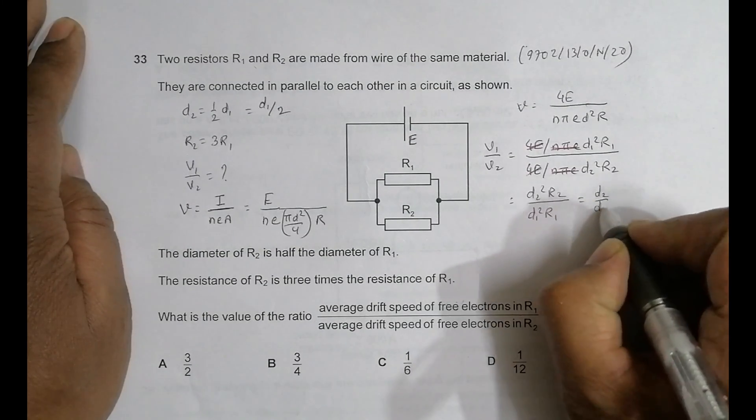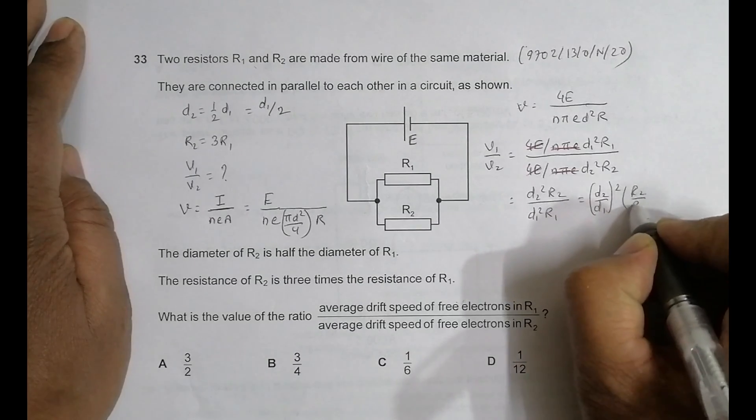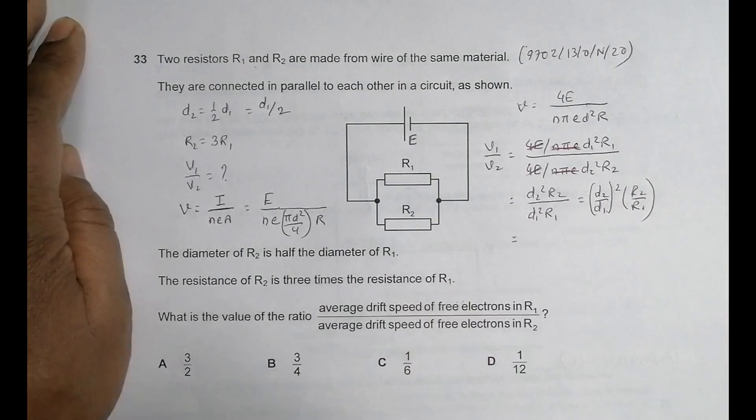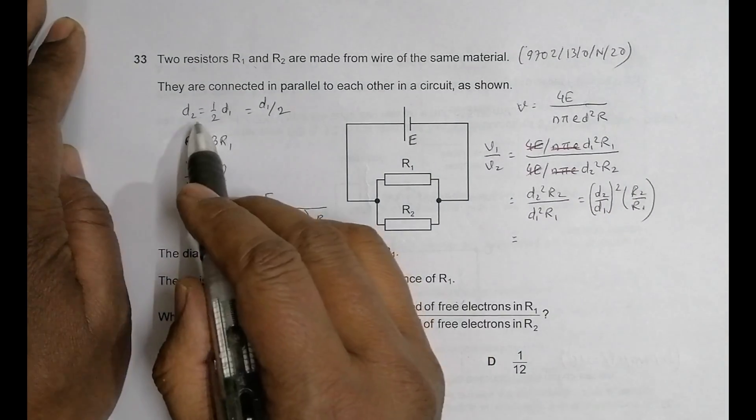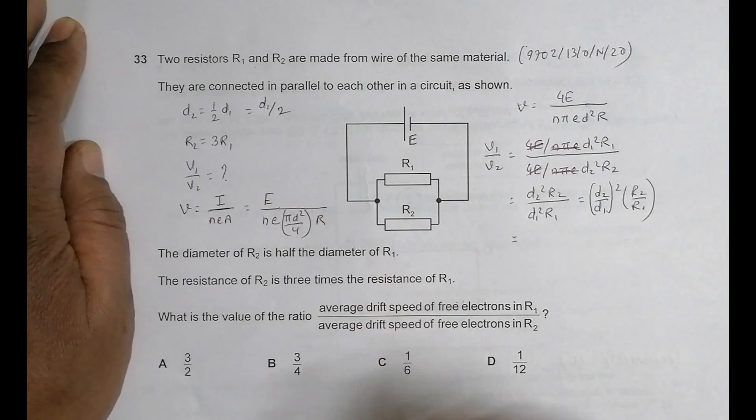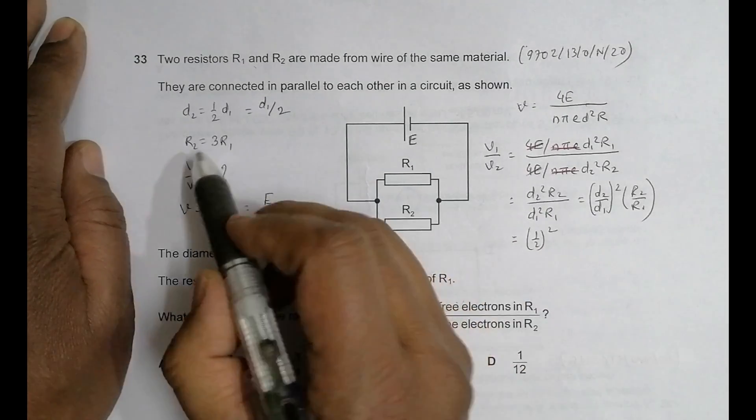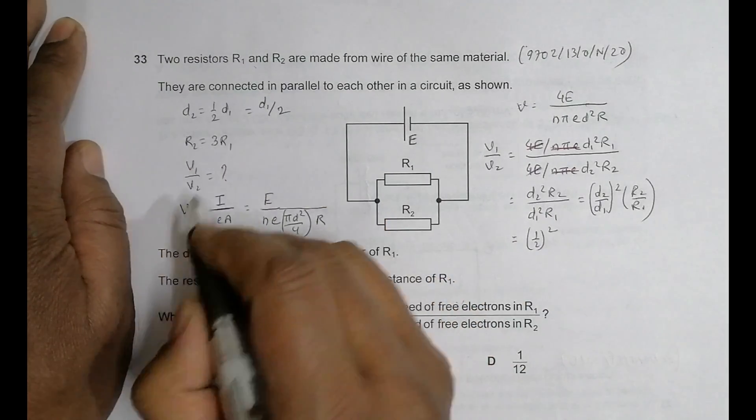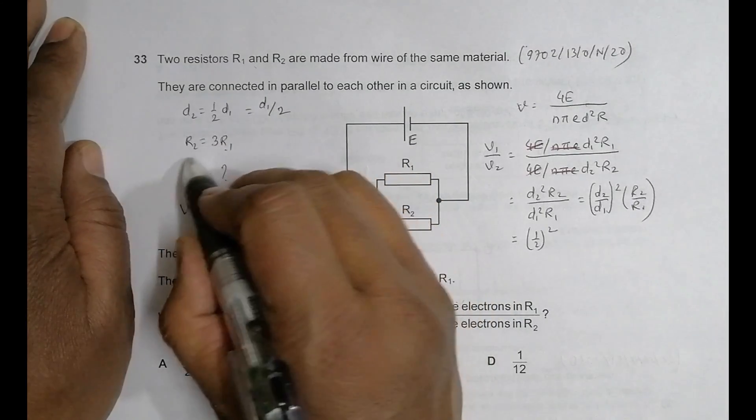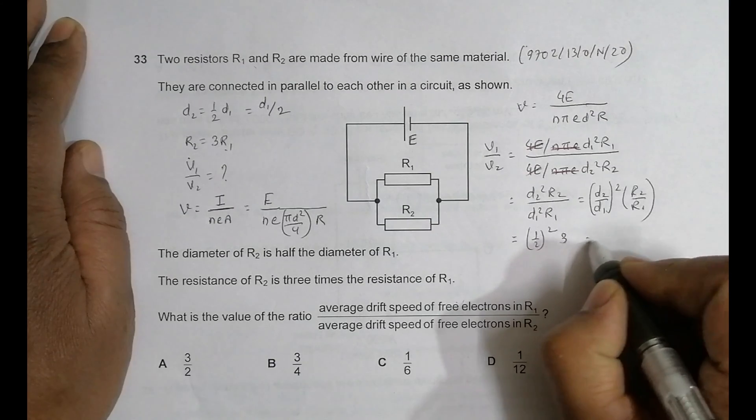This equals (D2 by D1) whole squared times R2 by R1. Now from the given information, D2 by D1 equals 1 by 2, so it will be (1/2)² and R2 by R1 equals 3. So this equals 1/4 times 3, which equals 3/4.